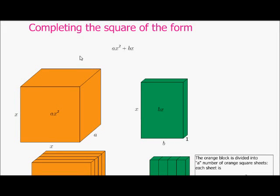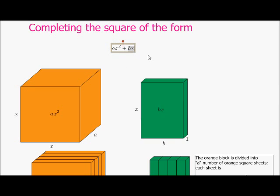Welcome to another math lesson. We're going to have a look at completing the square. If the square is of this form, here we have ax squared plus bx. Very often we'll also have a c there. But let's ignore the c for just now and see how would I complete the square if I had it of the form ax squared plus bx.